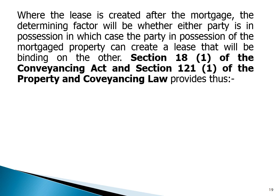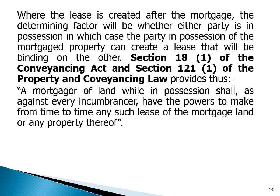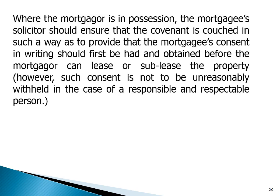Section 18(1) of the Conveyancing Act and Section 121(1) of the Property and Conveyancing Law provide that a mortgagor of land while in possession shall, as against every incumbrancer, have the power to make from time to time any lease of the mortgage land or any part thereof. Where the mortgagee is in possession, the mortgage solicitor should ensure that the covenant is drawn in such a way as to provide that the mortgagee's consent in writing should first be had and obtained before the mortgagor can lease or sub-lease the property. However, such consent is not to be unreasonably withheld in the case of a responsible and respectable person.